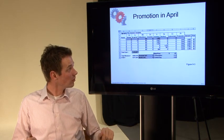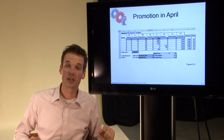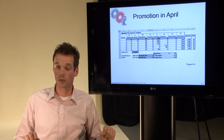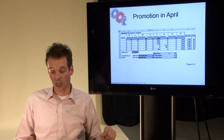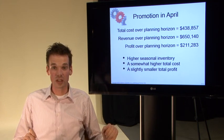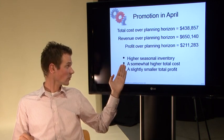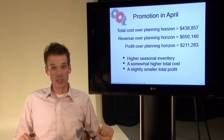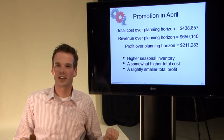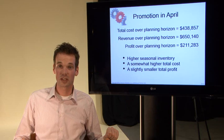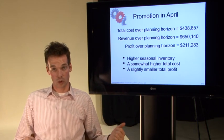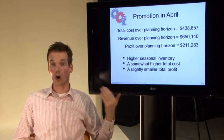If we do the same in April, now the demand has risen in April from 3800 to 5000, and we did that through giving a price discount of 1 dollar. So the price went from 40 to 39. What happens is that the total profit over the planning horizon went down to 201,000. It carries a higher seasonal inventory and a slightly smaller profit. So given a price reduction, price promotion in high season, in this case was not profitable for the whole supply chain.